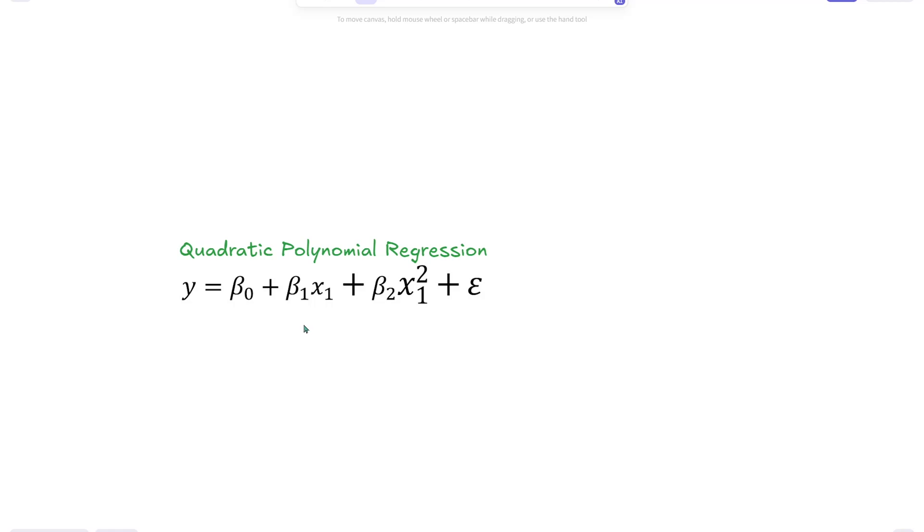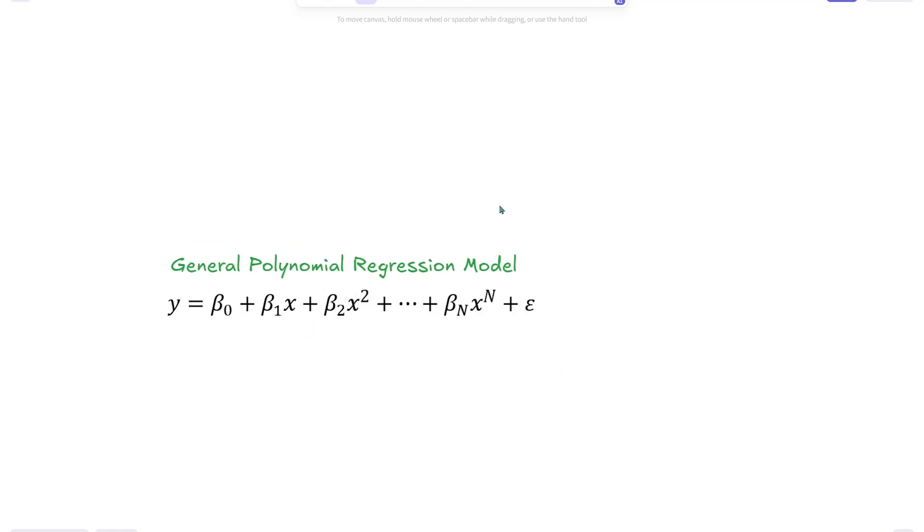So we often use the quadratic polynomial regression, where the dependent variable depends on the independent variable, on the predictor, but the relationship is not exactly linear. This is the general polynomial regression model, and if you want to learn more about the statistical part, I'm going to link an article in the description. In this video, I want to focus more on the practical application and how we can actually fit a polynomial regression model to our data set.